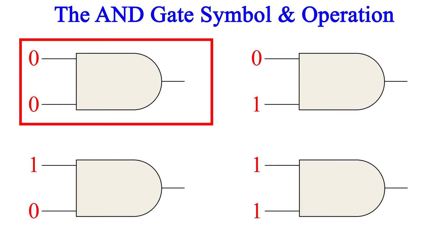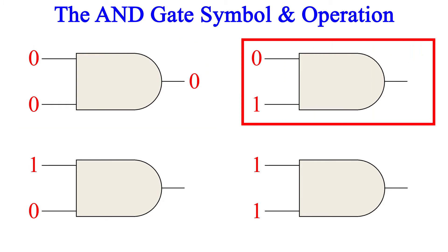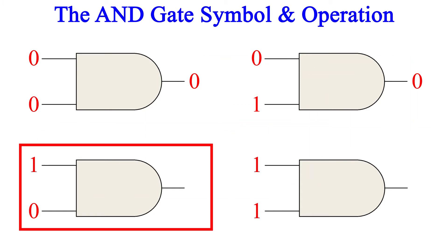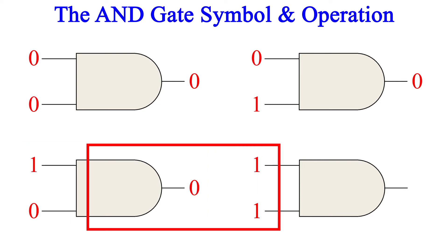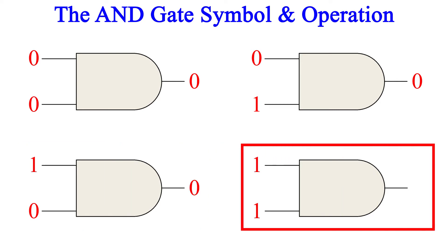So our first gate has inputs of 0 and 0, so the output is 0. The second gate has inputs of 0 and 1, so it, too, has an output of 0. The third has inputs of 1 and 0, which is just a mirror of the previous gate — it has an output of 0. Lastly, the fourth gate has inputs of 1 and 1. This is the only gate here that will have an output of 1.